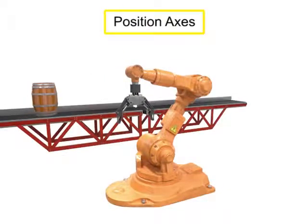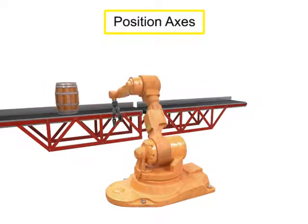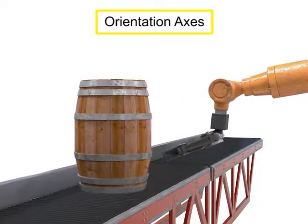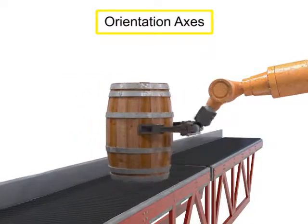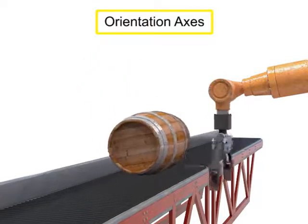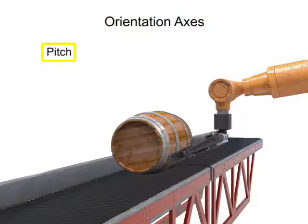While the position axes locate the tool in the work area, the orientation axes help orient the tool in relation to the work piece. The types of movement along orientation axes are defined as pitch, roll, and yaw.